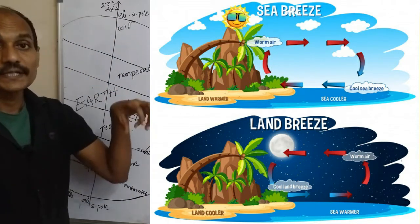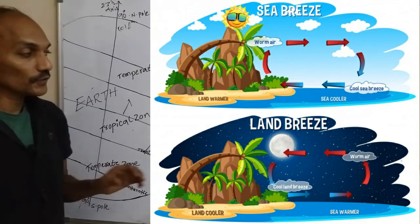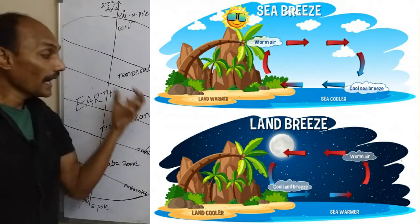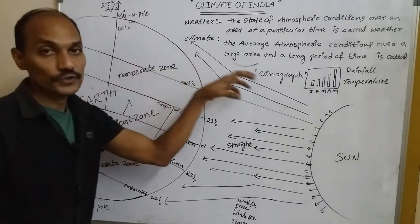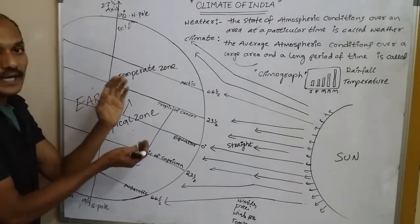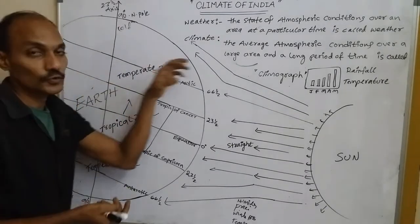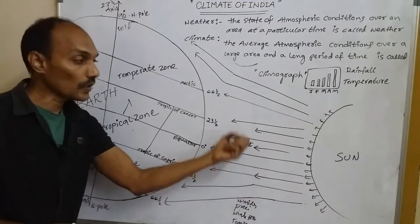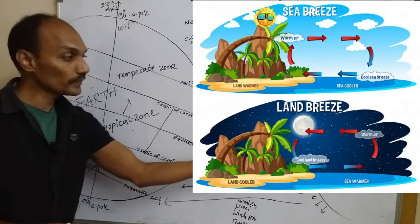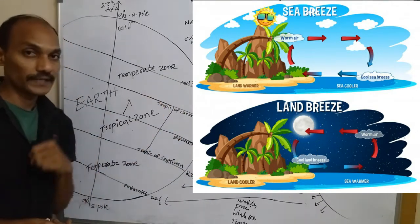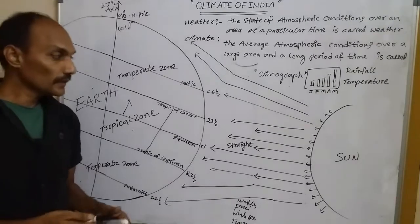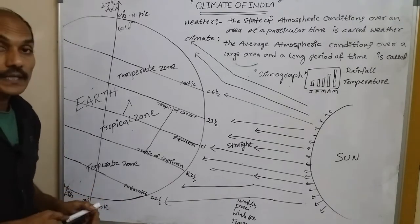In the daytime, cool breezes blow towards the land from the sea because the land heats up quickly and warm air rises, while the cool air from the sea moves in. The warm winds blow toward the seashore and cool winds blow towards the land.